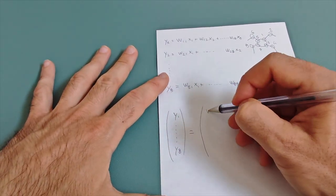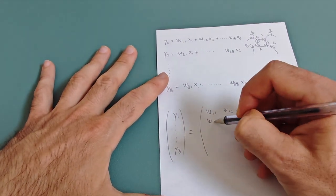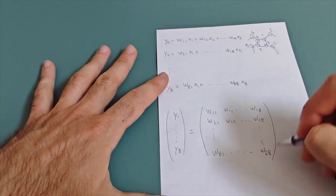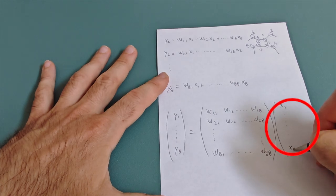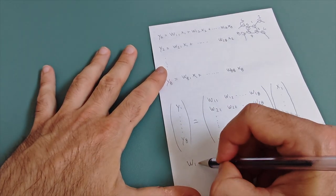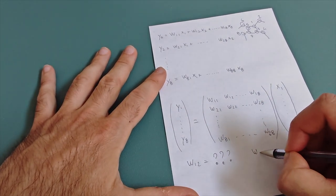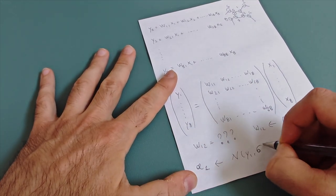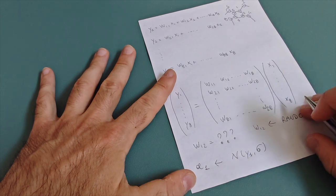These weights are the parameters of the policy. The same idea can be written as a matrix multiplication. All the actions can be computed at once by multiplying a weight matrix with the input state vector. This means we have a very simple neural network with no hidden layers, just a direct connection from inputs to outputs.